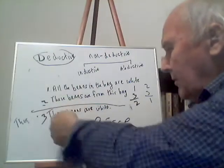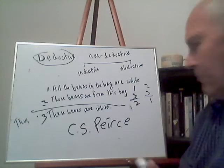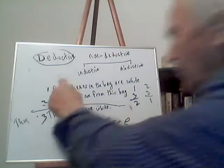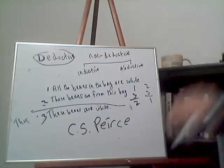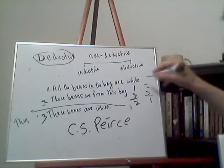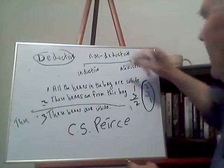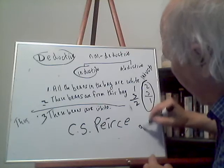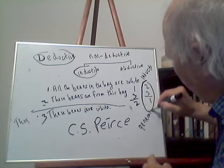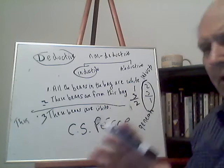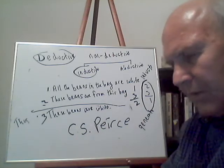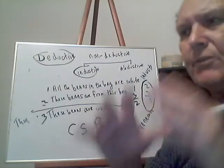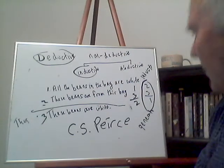The first argument form — one, two, three — is deductive. The third form — two, three, one — is going to be an inductive argument, specifically an inductive generalization. Anytime you generalize, you have a sample of things you're looking at and then generalize about all of them.